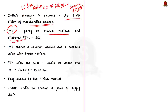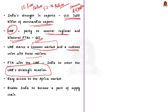UAE is a party to several regional and bilateral free trade agreements including with countries in the Gulf Cooperation Council. As part of the GCC, UAE has strong economic ties with Saudi Arabia, Qatar, Bahrain, and Oman, sharing a common market and customs union with these nations. Therefore, an FTA with UAE will pave the way for India to enter UAE's strategic location, provide relatively easy access to the African market, and help India become part of the supply chain — especially in handlooms, handicrafts, textiles, and pharma.